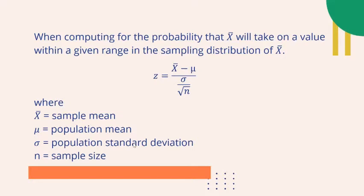This theorem applies automatically to sampling from an infinite population, meaning limitless. It also assures us that no matter what the shape of the population distribution of the mean is, the sampling distribution of the sample mean is closely normally distributed whenever n is large. Consequently, it justifies the use of the formula: Z is equal to your sample mean minus the mean, over your standard deviation divided by the square root of the size of your sample.